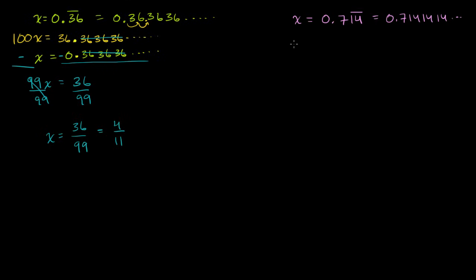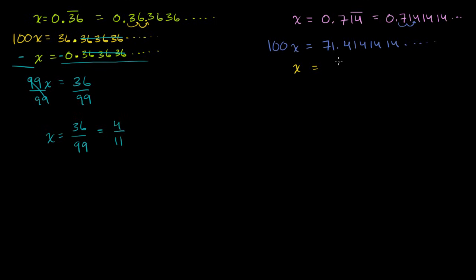You might be tempted to multiply by 1000 to get the decimal all the way clear of 714. But you actually don't want to do that. You want to shift it just enough so that the repeating pattern lines up under itself when you do the subtraction. So even though we have three digits behind the decimal point, because only two of them are repeating, we only want to multiply by 10 to the second power — multiply by 100. So 100x is equal to 71.4141 on and on. And notice the 14's are lined up right below each other, so it's going to work out when we subtract.